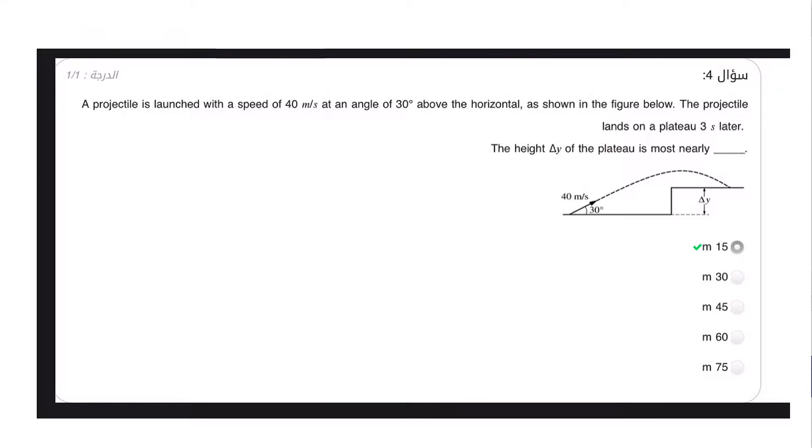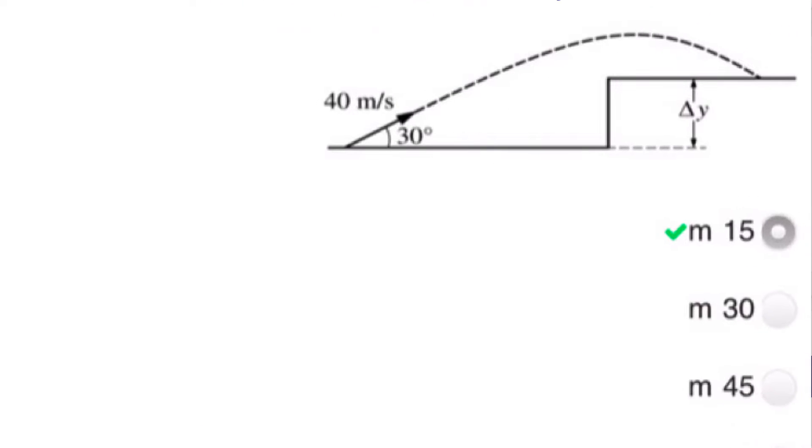Here is a sample problem about projectile motion. A projectile is launched with a speed of 40 meters per second at an angle of 30 degrees above the horizontal, as shown in the figure below. The projectile lands on a plateau three seconds later. The height of the plateau is most nearly—so this is our setup.